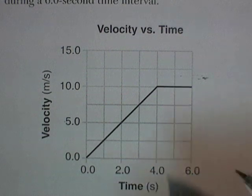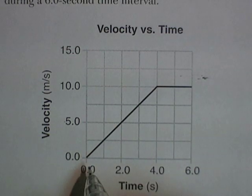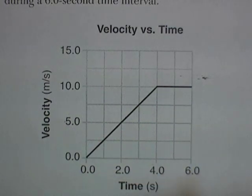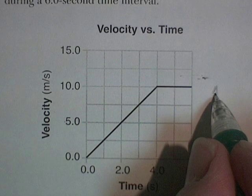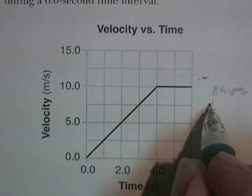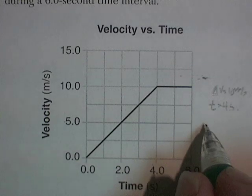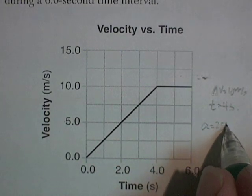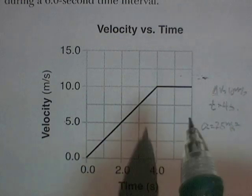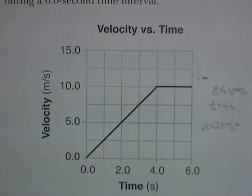Questions 37 and 38 pertain to this graph. I like to look at the graph first and figure it out. Starting at 0, I get up to a velocity of 10 meters per second in 4 seconds. So I have a change in velocity of 10 meters per second and a time of 4 seconds, giving an acceleration of about 2.5 meters per second squared. That works.